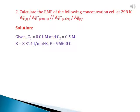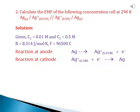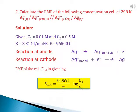R = 8.314 joules per mole per kelvin and F = 96,500 coulombs. The reaction at anode is: Ag → Ag⁺ + e⁻, and at cathode: Ag⁺ + e⁻ → Ag. Since the reaction occurs at standard temperature 298 kelvin, the appropriate equation is: E_cell = (0.0591 / n) × log(C2 / C1).